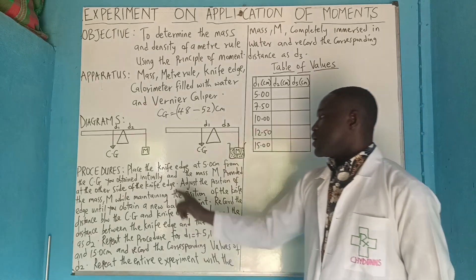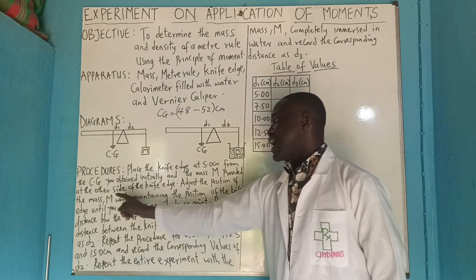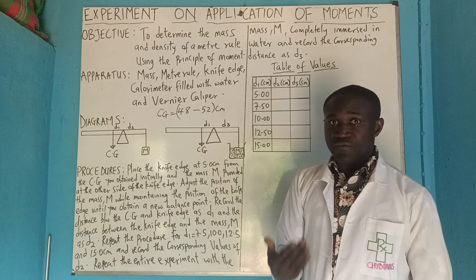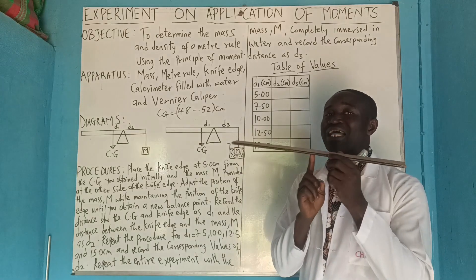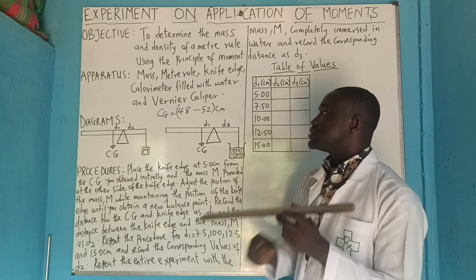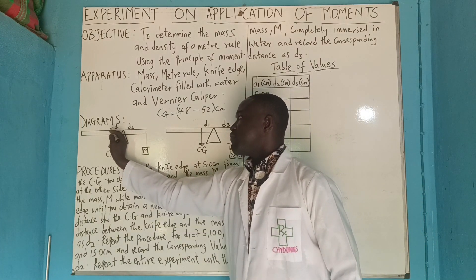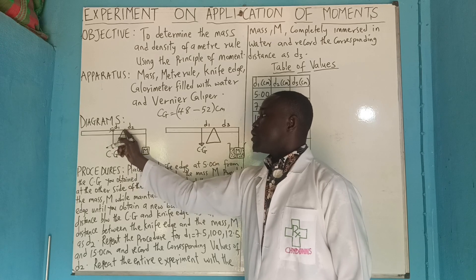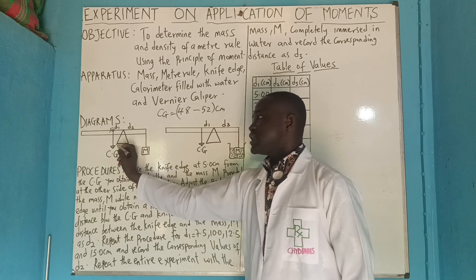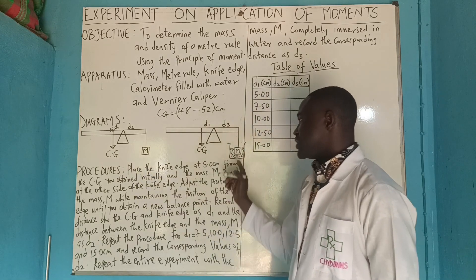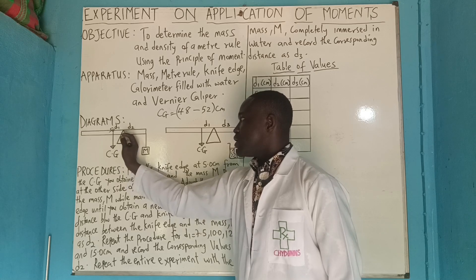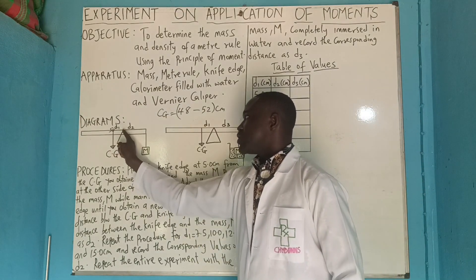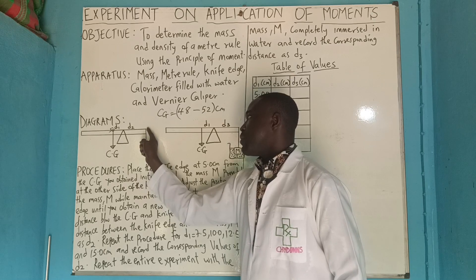First, get your center of gravity and note it. Then the mass is provided at the other side of the knife edge. If your center of gravity is at 50, that means the meter rule balances at 50. You now measure from 50 to the point where you place your knife edge - that distance is 5 cm. The remaining side from the knife edge to the end will be 45 cm.